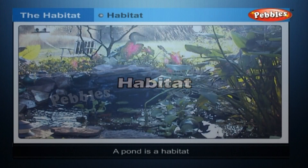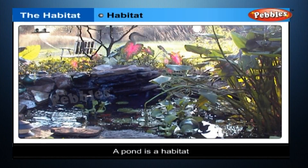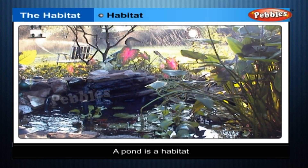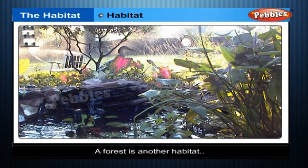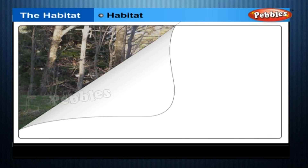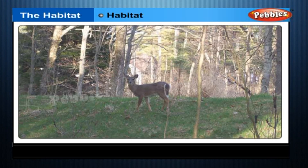A pond is a habitat. Similarly, a forest is another habitat. The bodies of animals are specially designed or made to help them live in their own habitat. Plants too live in specific habitats.